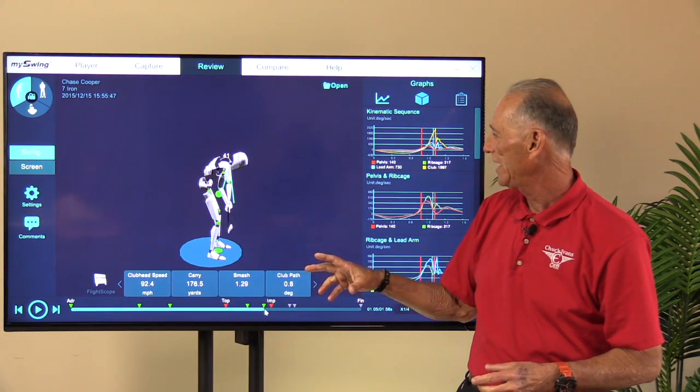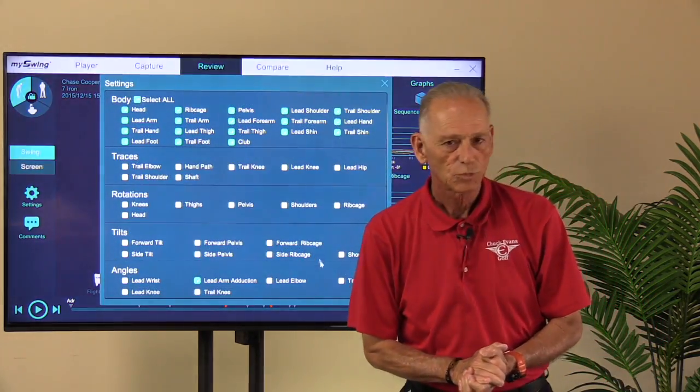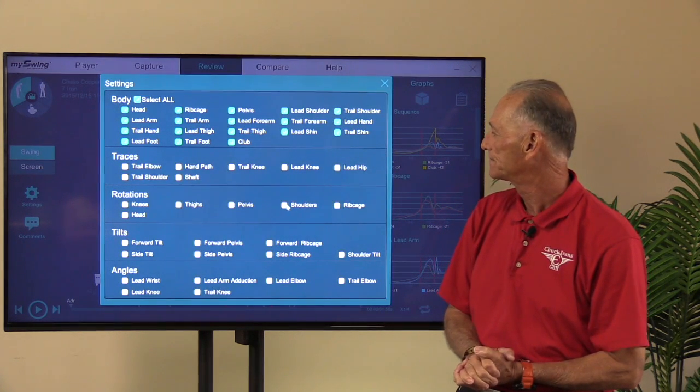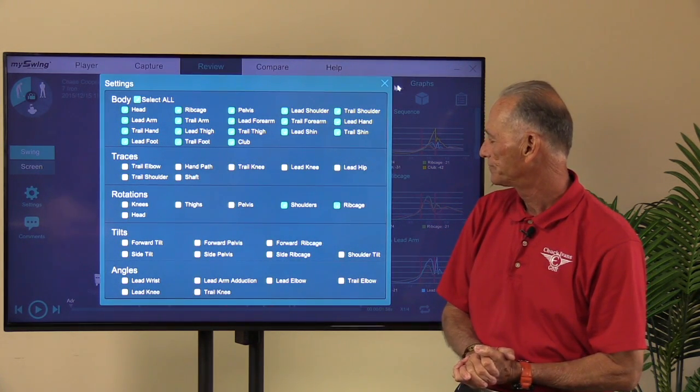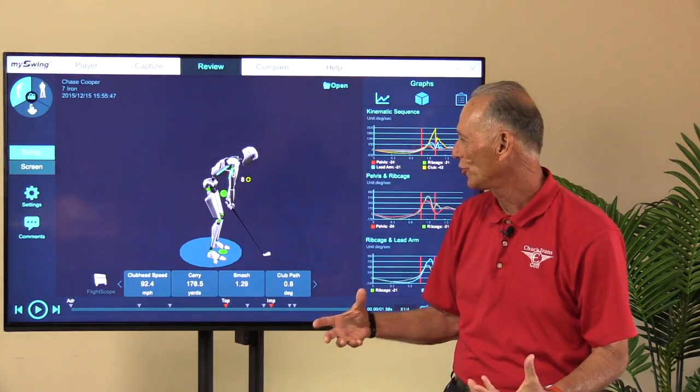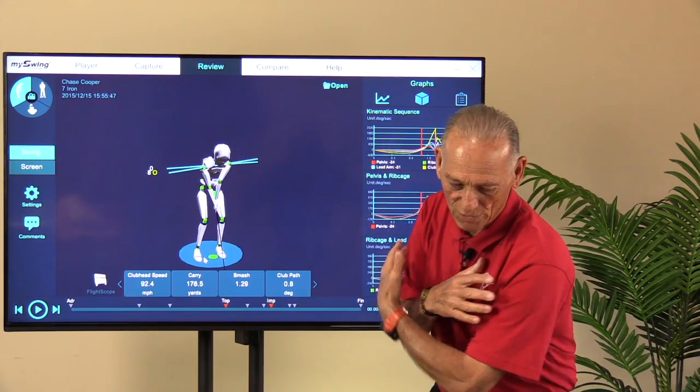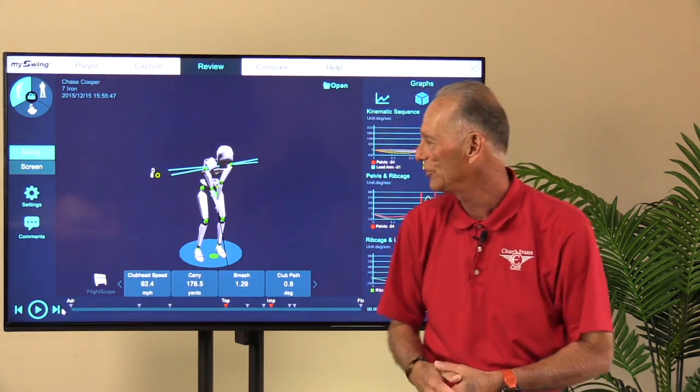Now let's take a look at just the thorax versus the shoulders, or the ribcage versus the shoulders. Because again, everybody talks about a lot of shoulder turn, and you know, we draw these lines that we measure and go, well, he's got 90, or she's got 90 degrees of shoulder turn.